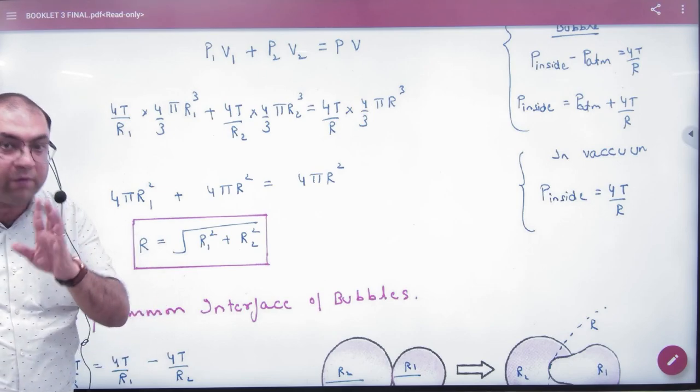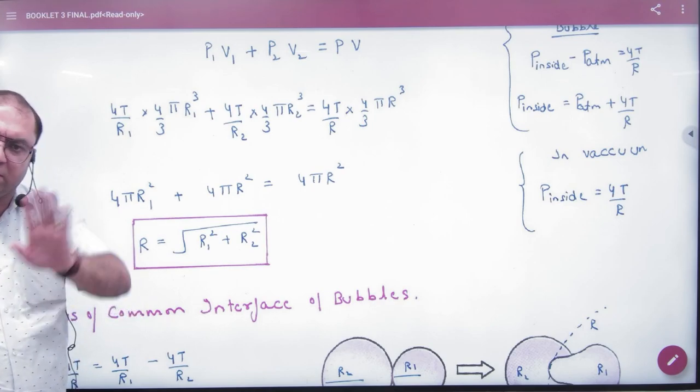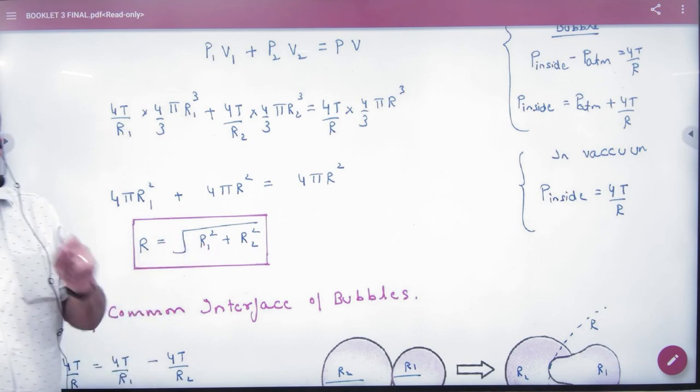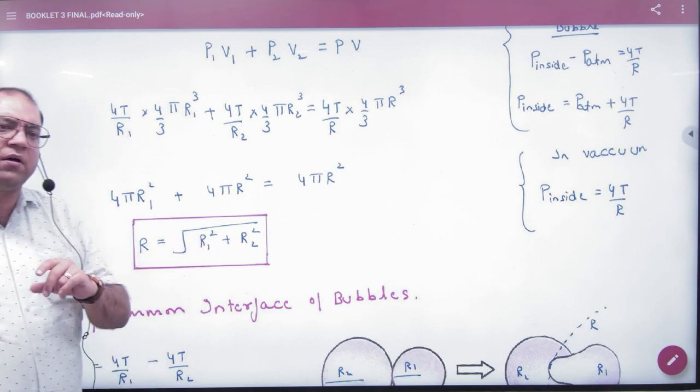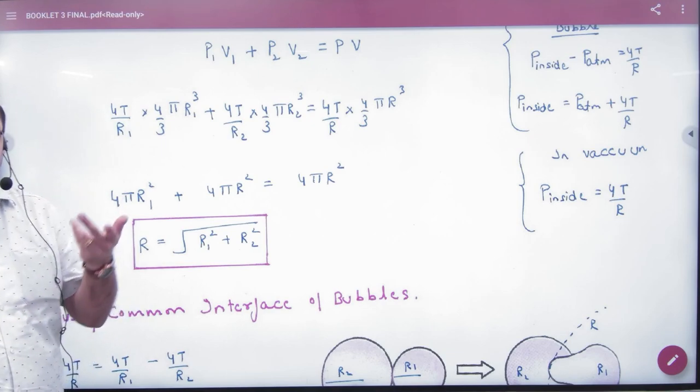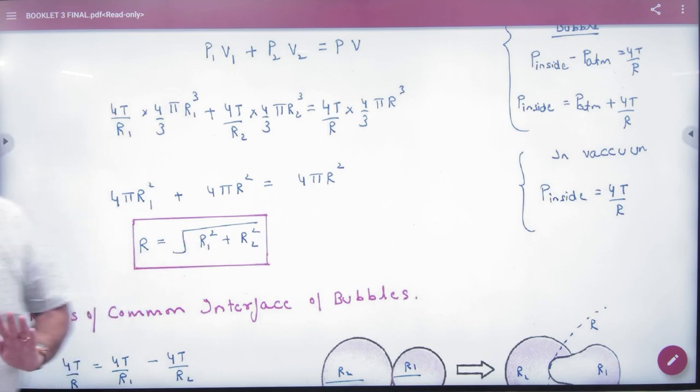This is for a bubble or air bubble, not a drop. If it were drops, the answer would come from volume. But for combination of bubbles, this is the formula. You can see that one bubble is 3 cm, one is 4 cm, both combined in vacuum. So what will be the new radius? 5 cm. So this explains the objective of bubble combination.